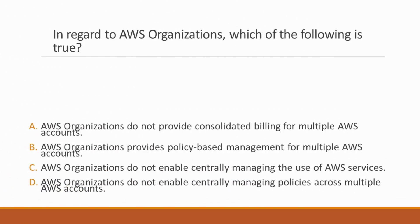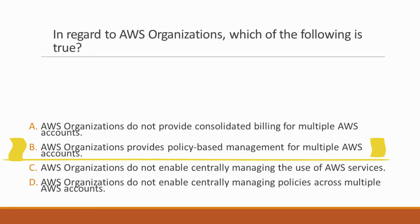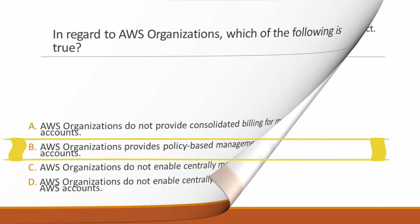Next question: In regard to AWS Organizations, which of the following is true? Options: A. AWS Organizations do not provide consolidated billing, B. AWS Organizations provides policy-based management for multiple AWS accounts, C. AWS Organizations do not enable centrally managing AWS services, D. AWS Organizations do not enable centrally managing policies across multiple accounts. Correct answer is option B — AWS Organizations does indeed provide policy-based management for multiple AWS accounts.